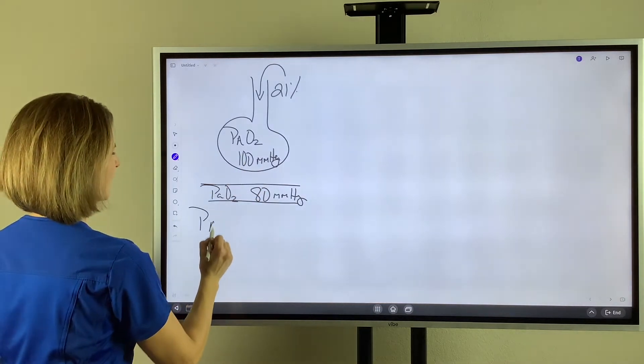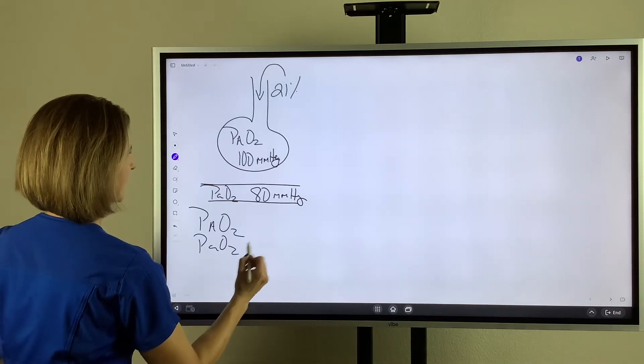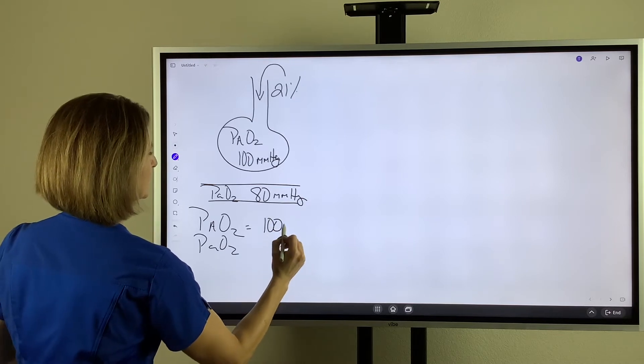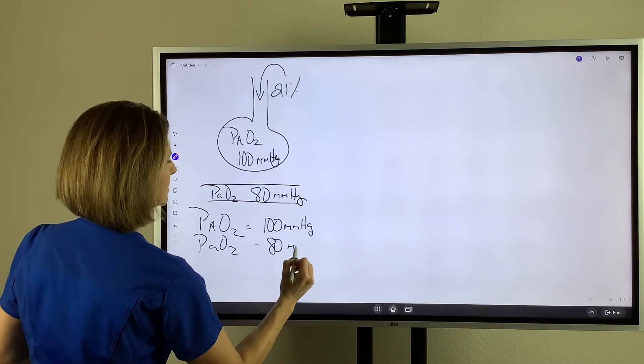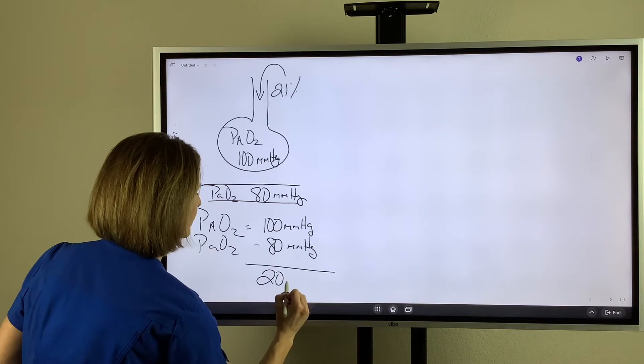The A-a difference is just subtracting 80 from 100. I'm going to write it a little differently because I think it makes more sense this way. Alveolar PO2 is 100, we subtract the arterial PO2 of 80, and the difference is 20.